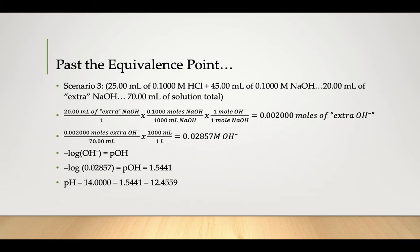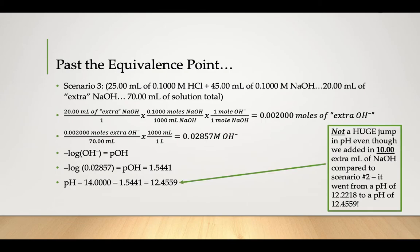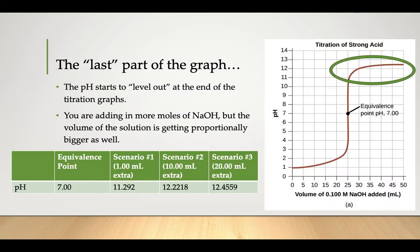When you compare scenario two to scenario three, we've added 10 extra milliliters this time, and now the pH hardly jumped at all. From the last scenario to this one, it only went up by about 0.2. This helps explain that last part of the graph where the pH starts to level out.